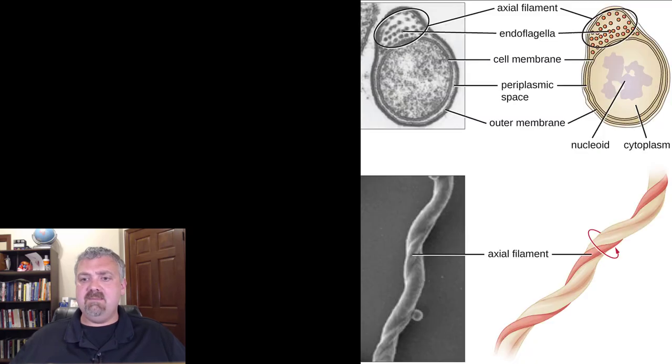So back to that main picture here. This is the axial filament, the special kind of flagella used for movement, only found in your spirochete organisms. Okay. Have a wonderful day. Be blessed.